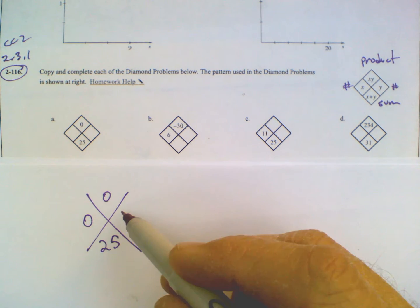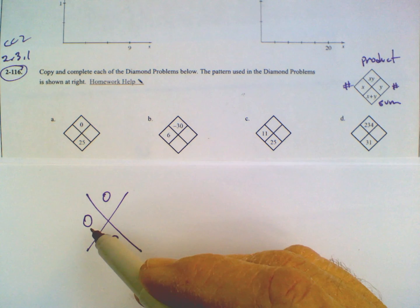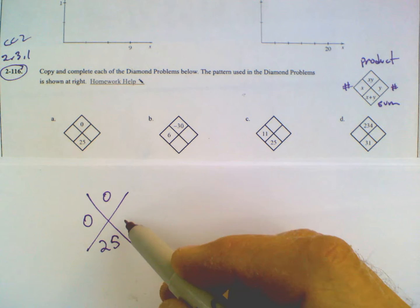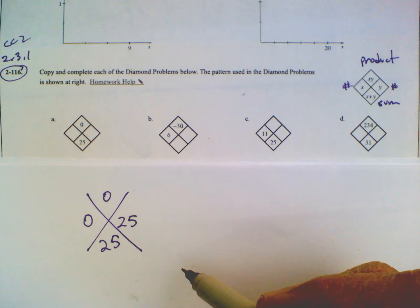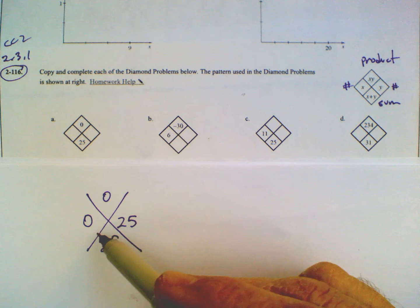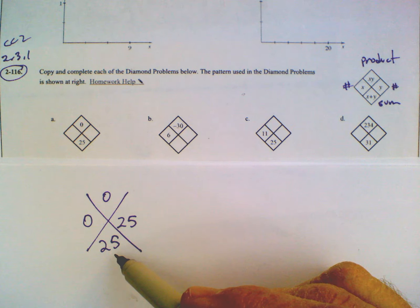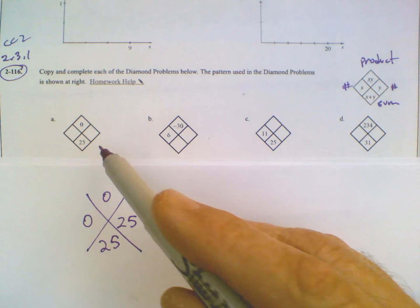0 times anything is 0. And then if I'm going to get the sum of 25, I have to say 0 plus something is 25, so the other number has to be 25. 0 times 25 is 0. 0 plus 25 is 25. So there's A.